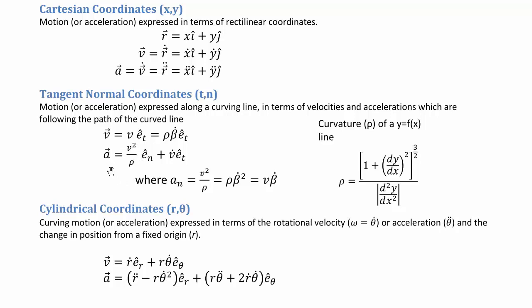We use v²/ρ probably 90-plus percent of the time. But if things are expressed in terms of angular velocity — written as β-dot — there are other equivalent forms. All of these have the same units: length per time squared.